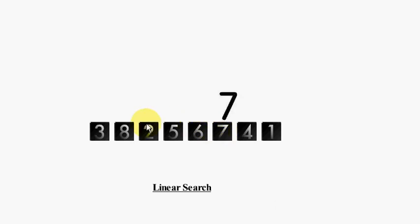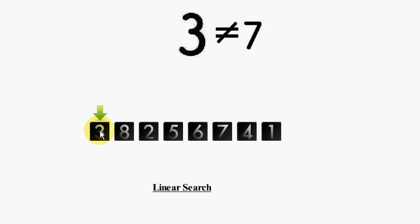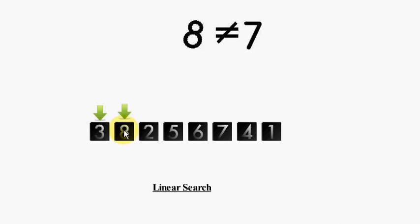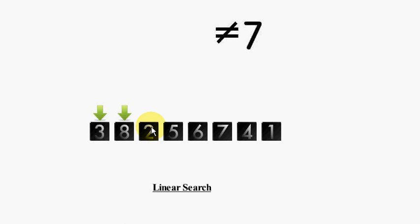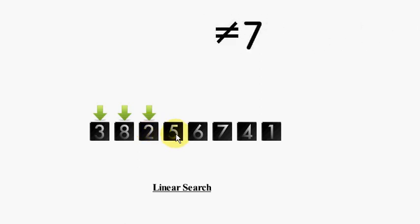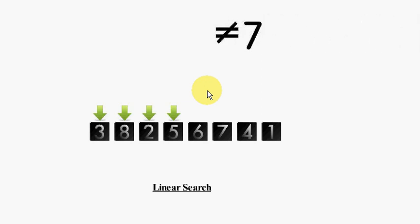So we will compare 7 with all the other elements in our array. The first element will be number 3, as it is on the first position. After comparing, we found that the element is not equal to 7, so we will remove that element and go to the next one. Again we compare our key element with the second element — again it is not equal, so we remove that. Same with the third element, number 2, which is again not equal to 7, so we remove 2. Then we do the same with 5 — again 5 is not equal to 7, so we remove it. This process continues until you find the search element or you reach the end of the array.